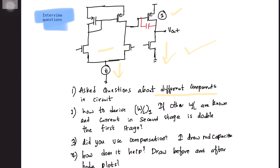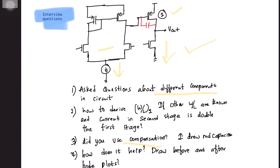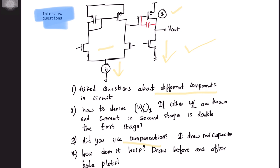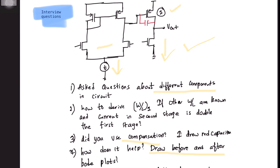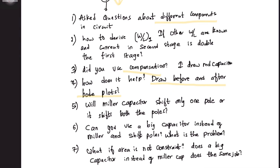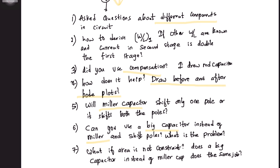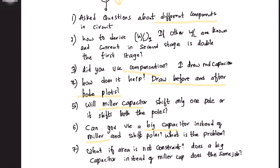The next question asked was: did you use compensation, and how did the compensation help in this circuit? What is the role of the capacitor and how did it change the poles of the circuit? They asked me to draw Bode plots before and after using the Miller capacitance. Further questions included: will the Miller capacitor shift only one pole or both poles? Can you use a big capacitor connected to ground instead of a Miller capacitor? What is the problem with such a modification? If area is not a constraint, does a big capacitor do the same job as a Miller capacitor?